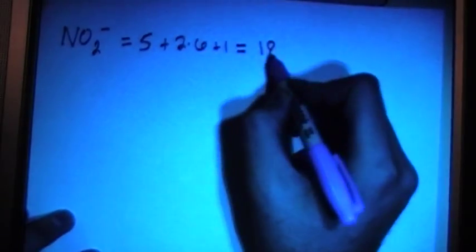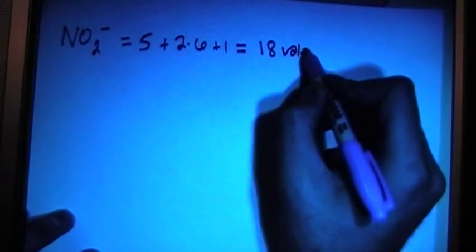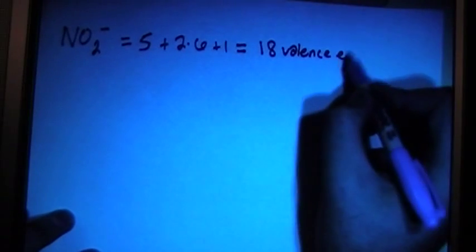Okay, so this one's going to give us nitrogen has five valence electrons plus two times six valence from the oxygen plus one from the charge. So that's going to give us a total of 18 valence electrons.